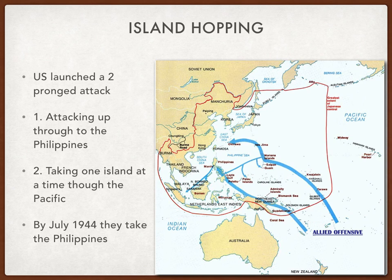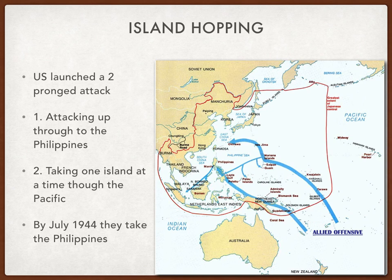The US then launched a two-pronged attack after the Battle of Midway. The first prong went up through the Philippines — you can see the blue line on the bottom going through New Guinea — starting at Guadalcanal, taking the Philippines, and using that as a launching point into Malaya and Thailand. The second policy, shown by the blue arrow on top, involved taking one island at a time through the Pacific, known as island hopping. By July 1944 the Americans had taken the Philippines, wiped out many Japanese-held areas in Southeast Asia, and were preparing to invade mainland Asia.